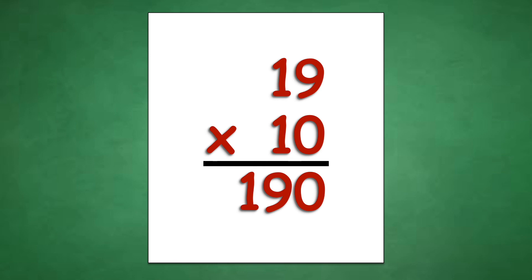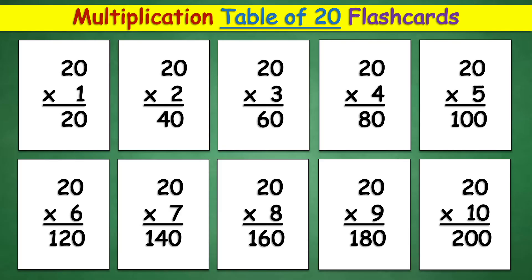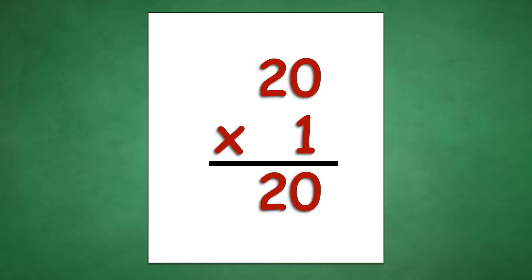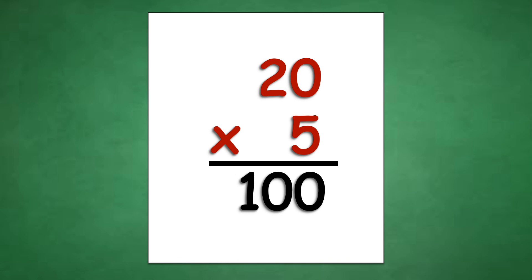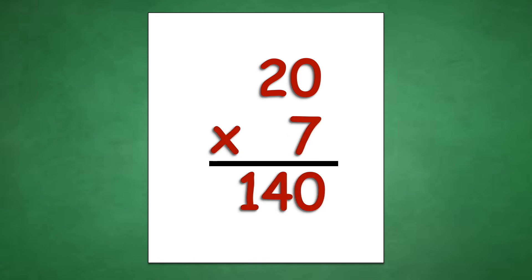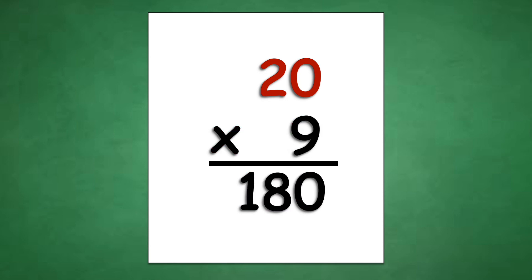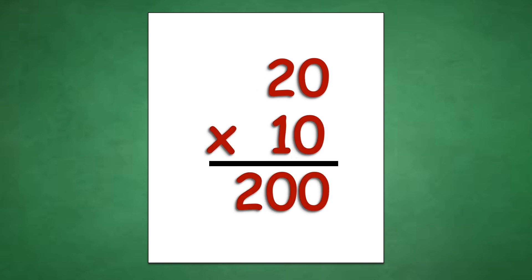19 times 10 equals 190. Table of 20: 20 times 1 equals 20, 20 times 2 equals 40, 20 times 3 equals 60, 20 times 4 equals 80, 20 times 5 equals 100, 20 times 6 equals 120, 20 times 7 equals 140, 20 times 8 equals 160, 20 times 9 equals 180, 20 times 10 equals 200.